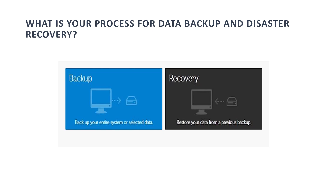A sample answer: I prioritize a 3-2-1 backup strategy — three total copies of data, two of which are local but on different devices, and one off-site. For disaster recovery, I have implemented automated regular backups and tested our recovery procedures biannually. This strategy was crucial when we experienced a system outage but were able to restore all services within two hours with minimal data loss.